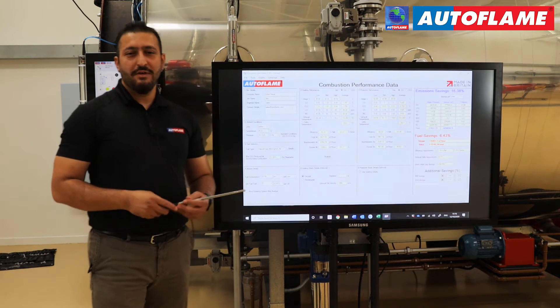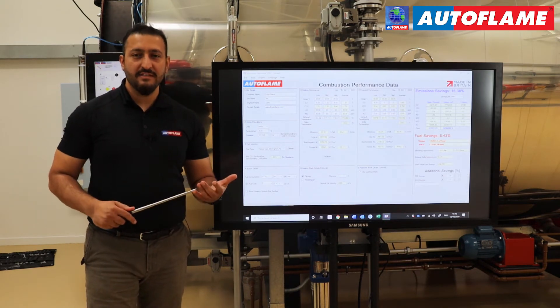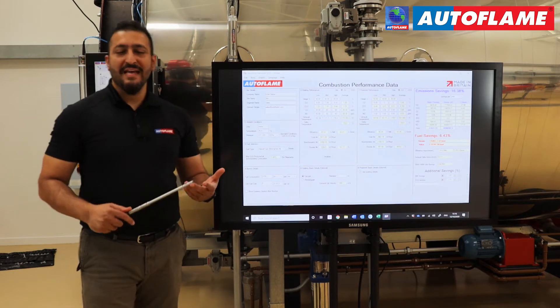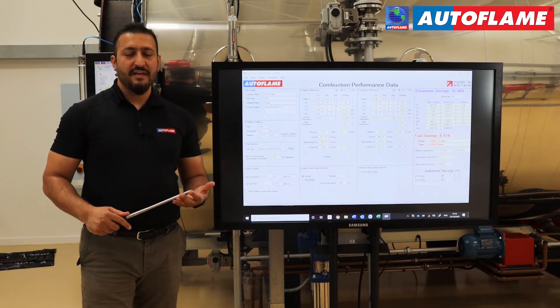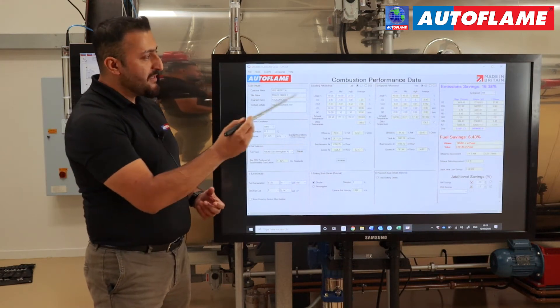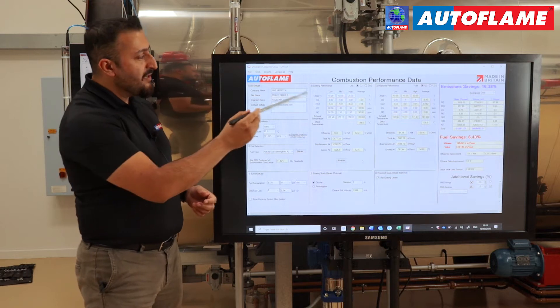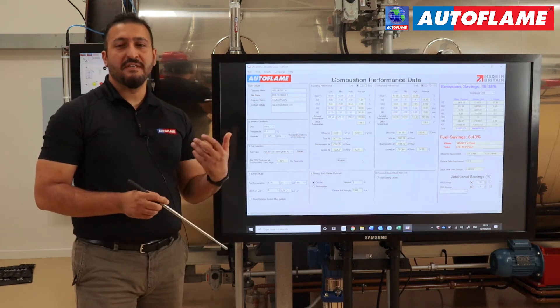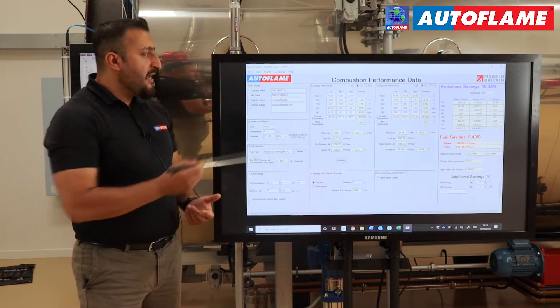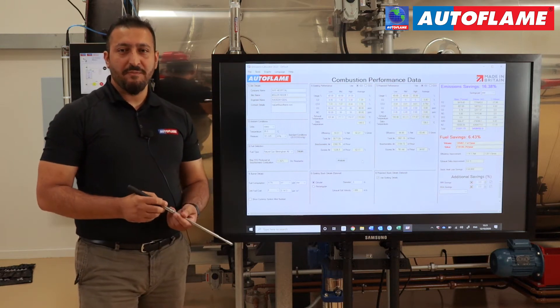In order to use this software, the typical data we need is the O2 readings, CO readings, your stack temperatures, your fuel usage, and the fuel cost. The new emissions calculator has been divided into eight different sections. Anything which is yellowed out is information which it automatically calculates. Anywhere with white boxes, that's where we need to put the information in.